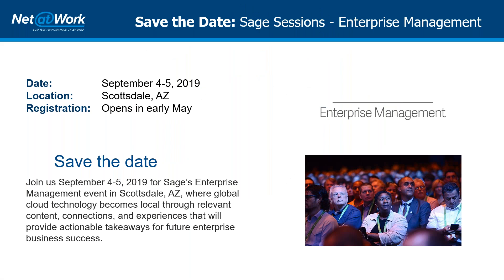Sage has announced a Sage Summit for the Enterprise Management System, which will be only for Sage EM, otherwise known as Sage X3. It's going to be on September 4th and 5th in Scottsdale, Arizona. Open registration will start in May. It will have breakout sessions similar to other Sage summits, but will only concentrate on the EM product line. Net at Work will have people there. If you have any questions or would like to know about registration promos, feel free to email me.